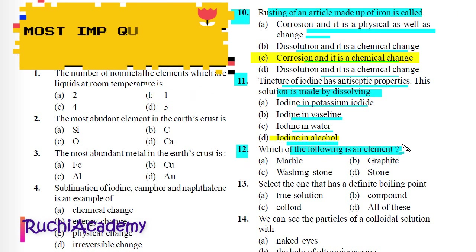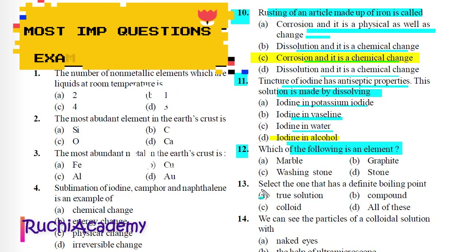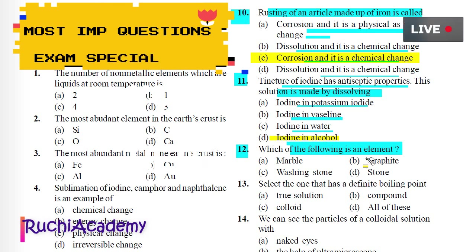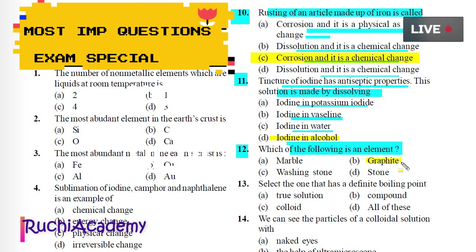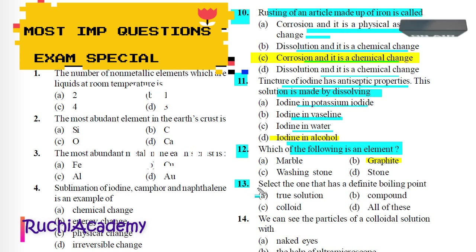Question 12: Which of the following is an element? A) Marble, B) Graphite, C) Washing stone, D) Stone. Correct answer is B) Graphite, because graphite is made up of carbon only.